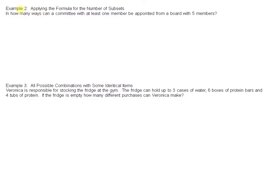Apply the formula for a number of subsets. In how many ways can a committee with at least one member be appointed from a board with five members?